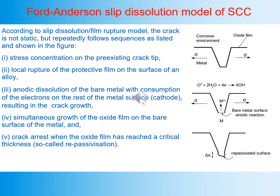We will deal mostly with the Ford-Anderson slip dissolution model of stress corrosion cracking. According to this model, the crack is not static but repeatedly follows five sequences: stress concentration at the pre-existing crack tip, local rupture of the protective film, anodic dissolution of the bare metal, simultaneous growth of the oxide film, and finally crack arrest when the oxide film reaches critical thickness — so-called repassivation.